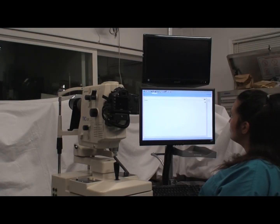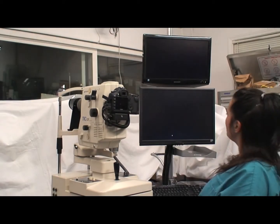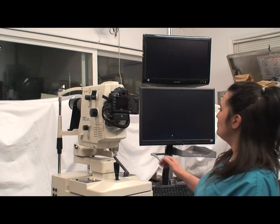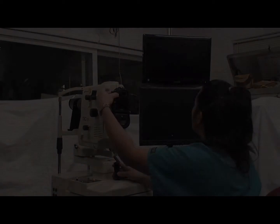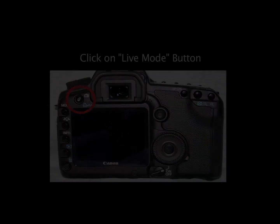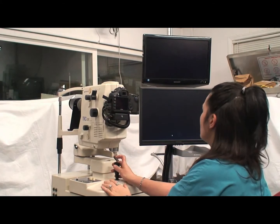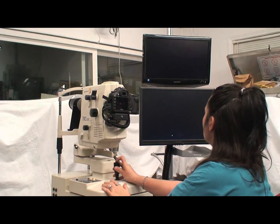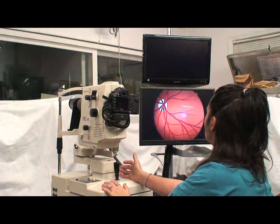Now click on the digital camera icon to go into capture mode. If you have a live video system, click on the live mode button on the Canon 5D Mark II. Fire the joystick on the retinal camera once to start the live mode.